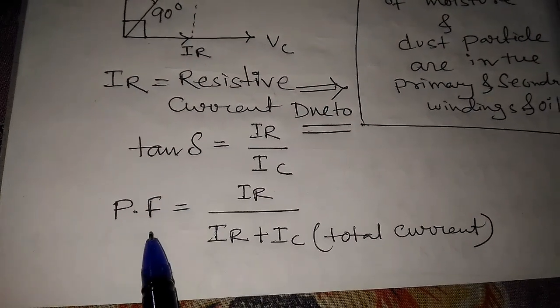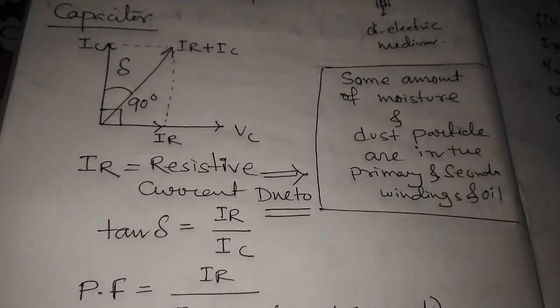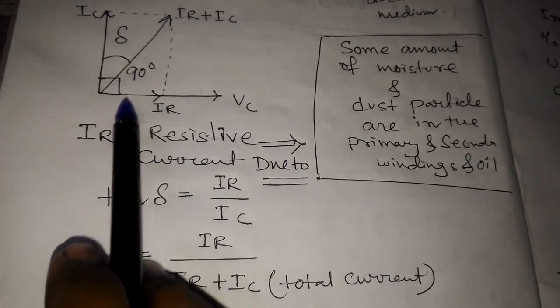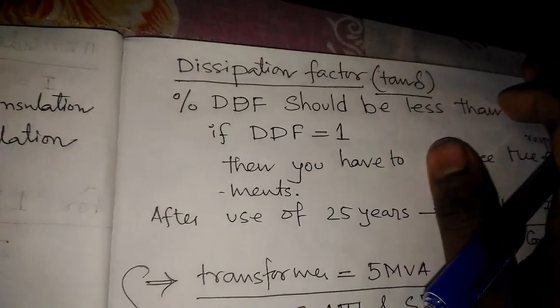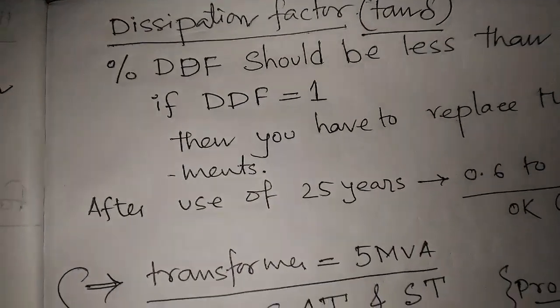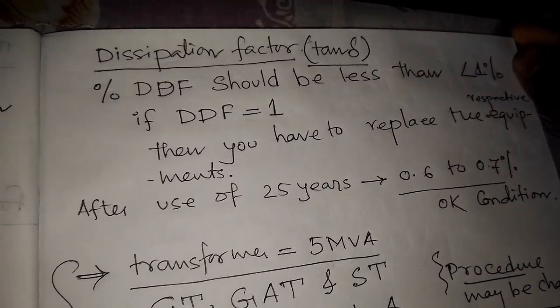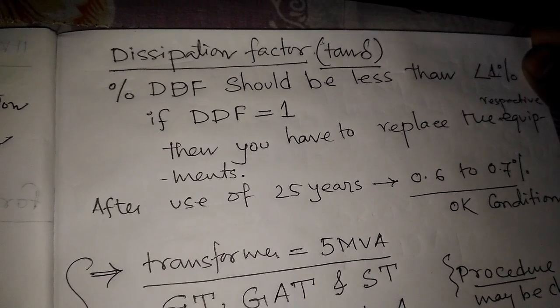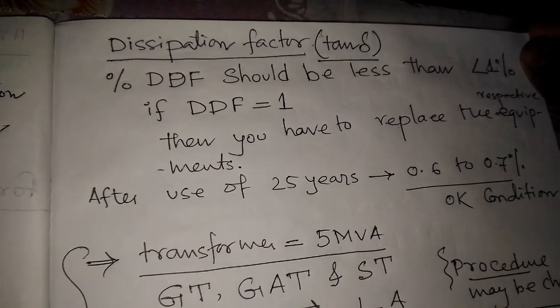If we discuss about power factor, then the power factor is the resistive current IR divided by the total current. The total current is IR plus IC. So IR divided by (IR plus IC) is the power factor. Another name for the Tan Delta is the Dissipation Factor (DDF). The percentage DDF should be less than 1%. If the dissipation factor is less than 1%, the equipment insulation is in better condition.